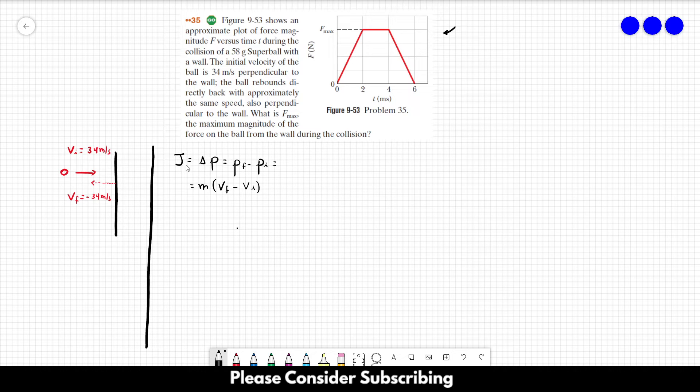Another way to calculate the impulse is to take the area under the curve F versus t. So we have this value and we will compare with this area.